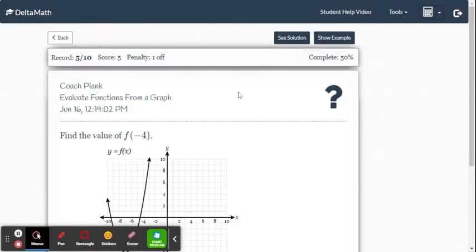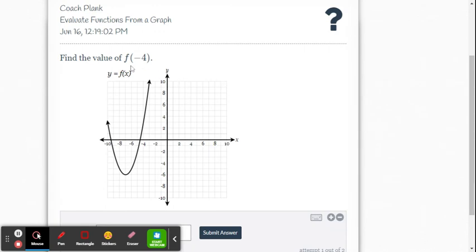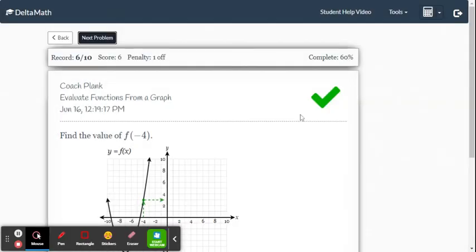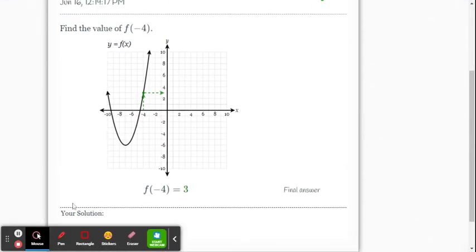And we'll do one more. Find f of negative 4 again. So we go to negative 4 for x. And what's the y value? It looks like it's 3. And there you go. That's all there is to it.